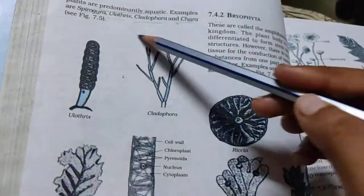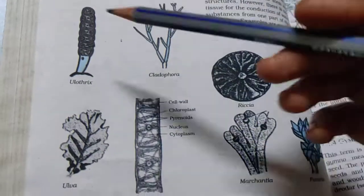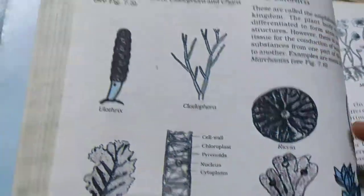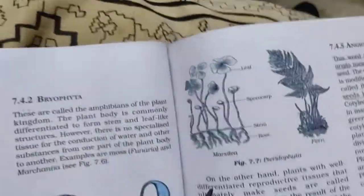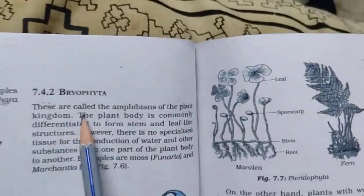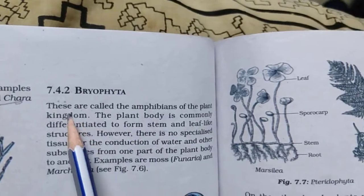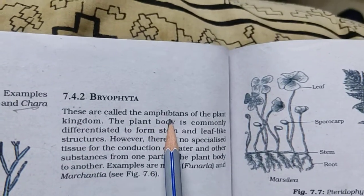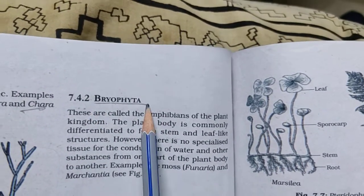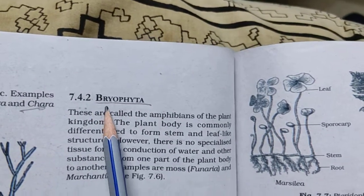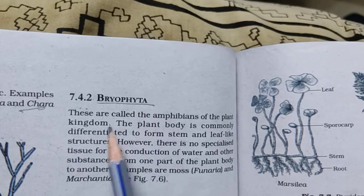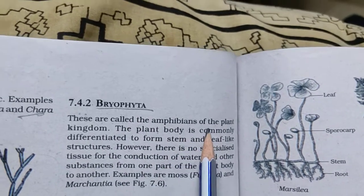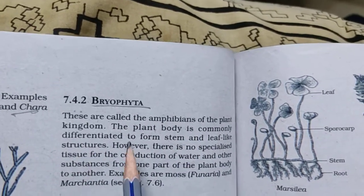The next type of plant category - these are called the amphibians of the plant kingdom. This group is called Bryophyta.